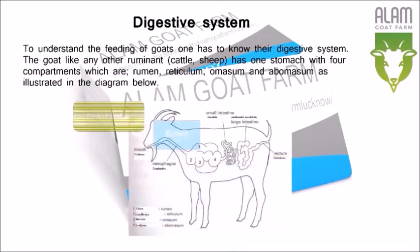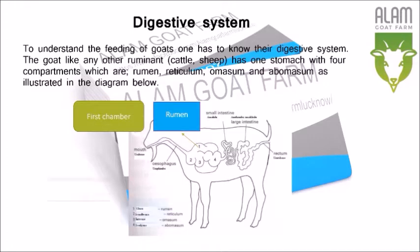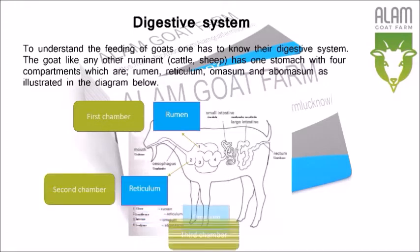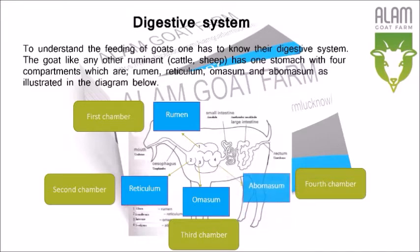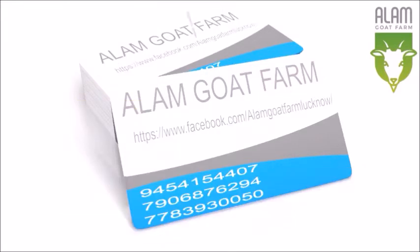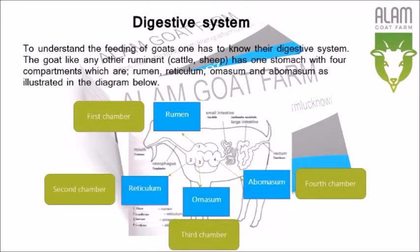First Chamber: Rumen. Second Chamber: Reticulum. Third Chamber: Omasum. Fourth Chamber: Abomasum.